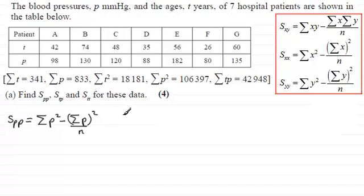There's going to be similar results for working out STP. When it comes to STP, we've got to follow this one here. So it's just going to be sigma of TP minus sigma T multiplied by sigma P, and all of that is divided by N. And again, we'll just substitute our values in.